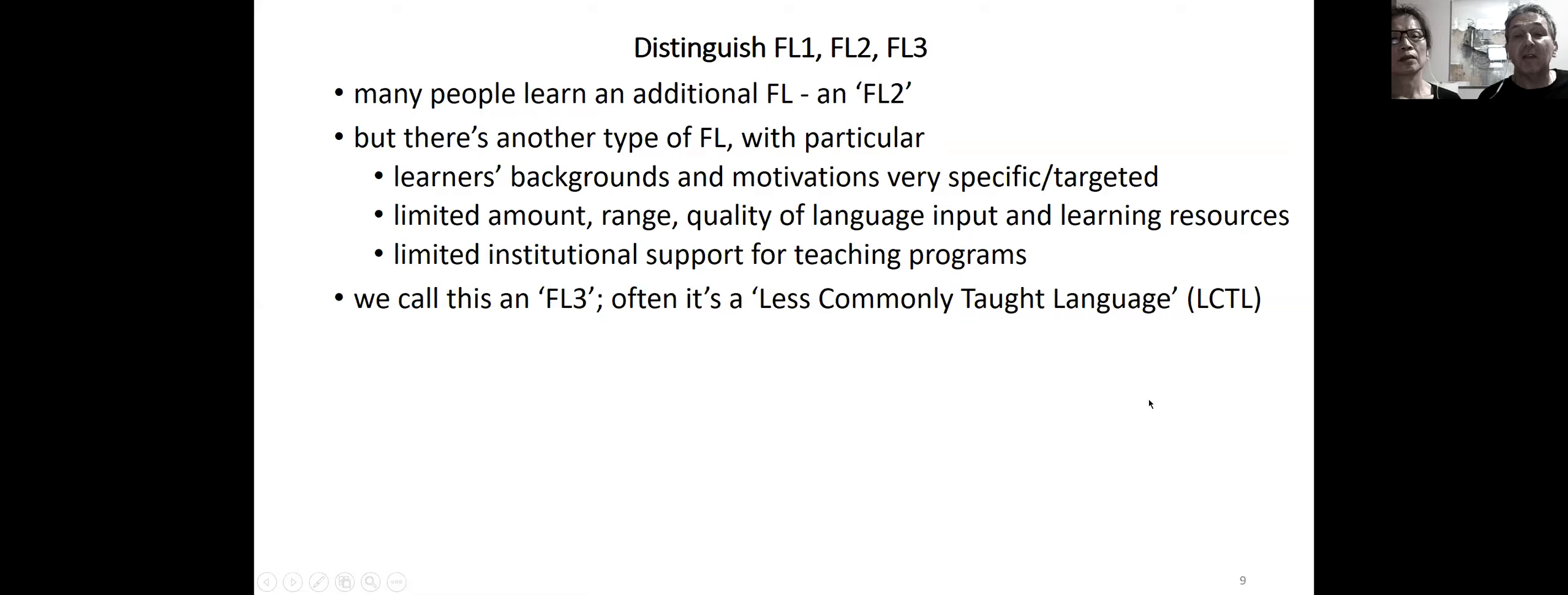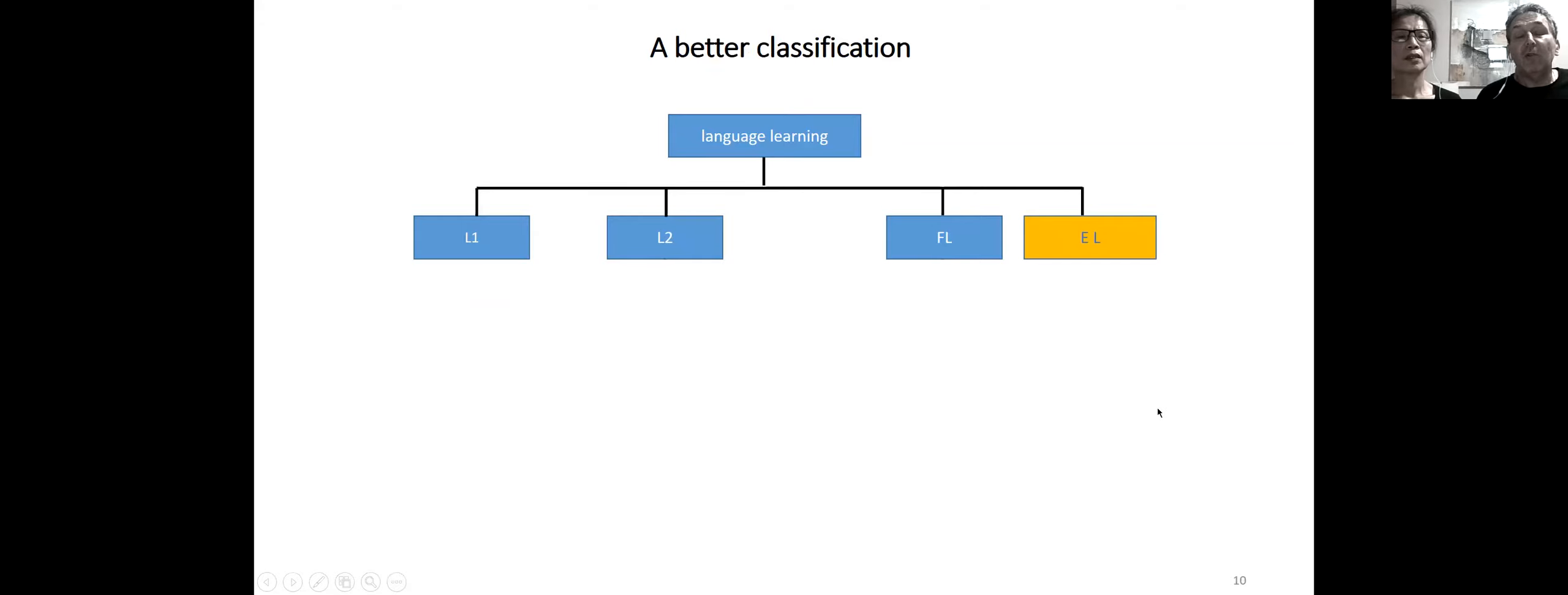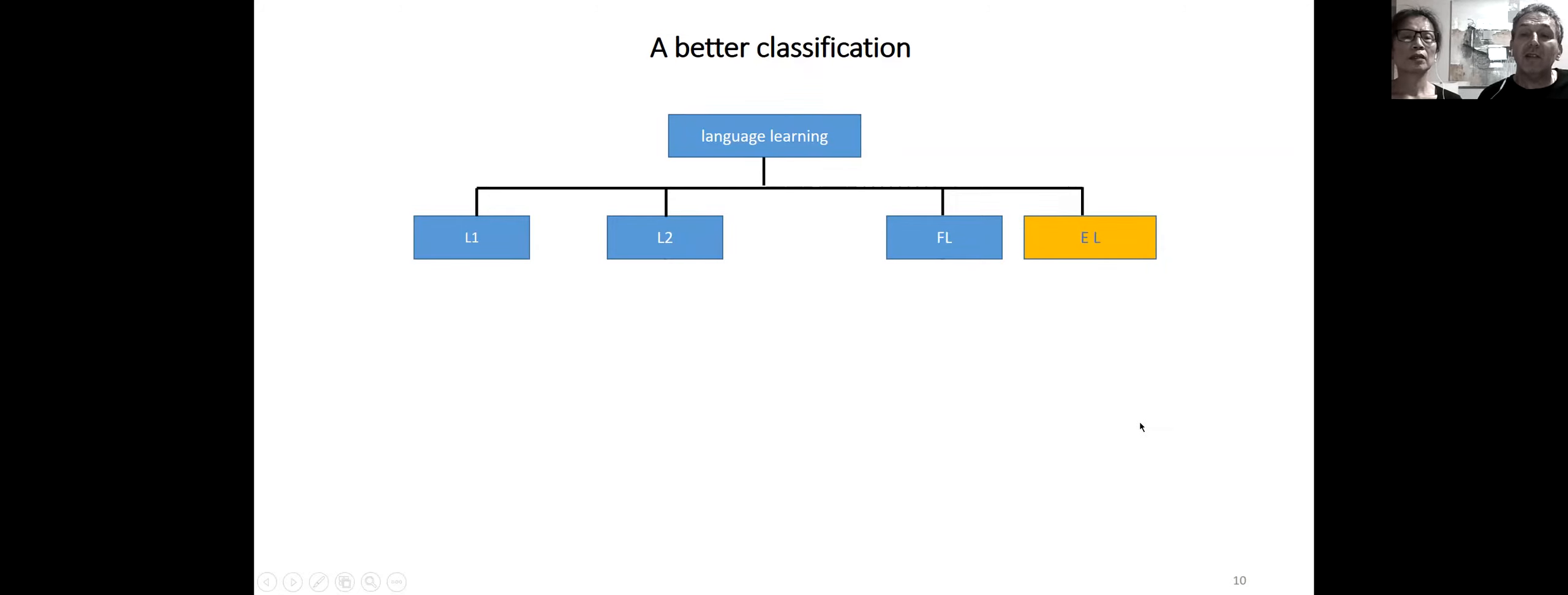There's a special category. Although often people learn an additional foreign language, an FL2, there's one that Mei Li identified and is particularly interested in and worked towards, where there's very specific and targeted backgrounds and motivations of the learners, very limited amount and quality of the language input and learning resources, and very limited institutional support for teaching programs. She calls those FL3s, which corresponds to what is called in some places less commonly taught languages. If we looked at just drawing all that together, we've got perhaps standard categories L1, L2, foreign language and endangered language. But we'd like to suggest that maybe there's actually a bunch of other categories, various granularities of L2 and of foreign languages, where learning endangered languages could fit in different places within that classification.